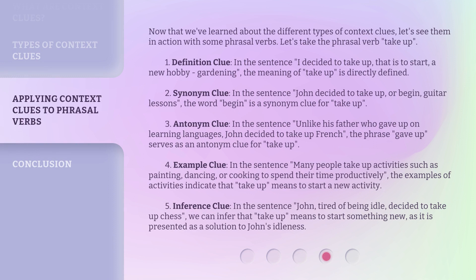Now that we've learned about the different types of context clues, let's see them in action with some phrasal verbs. Let's take the phrasal verb 'take up.' 1. Definition clue: In the sentence, 'I decided to take up — that is, to start — a new hobby, gardening,' the meaning of 'take up' is directly defined. 2. Synonym clue: In the sentence, 'John decided to take up, or begin, guitar lessons,' the word 'begin' is a synonym clue for 'take up.'